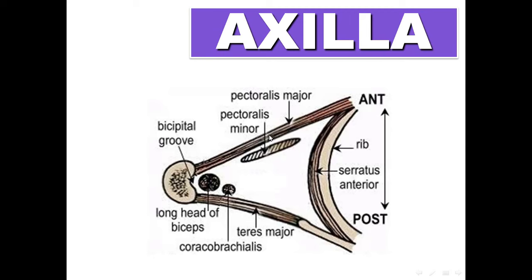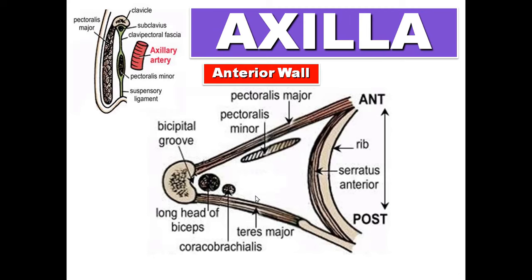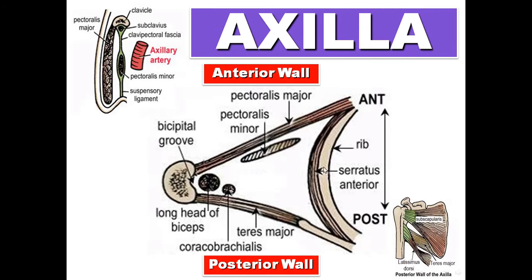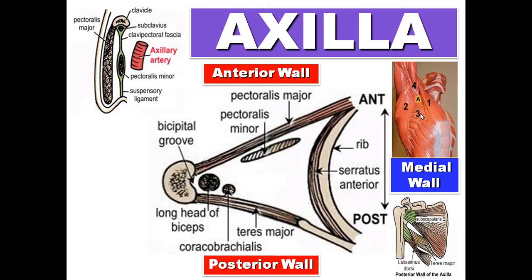Again, this is the axilla with its anterior, posterior, medial, and lateral walls. The anterior wall: pectoralis major, pectoralis minor, subclavius, and clavipectoral fascia. The posterior wall: subscapularis, teres major, latissimus dorsi. The medial wall: serratus anterior, ribs, and intercostal muscles. The lateral wall: bicipital groove, long head of biceps, short head of biceps, and coracobrachialis.